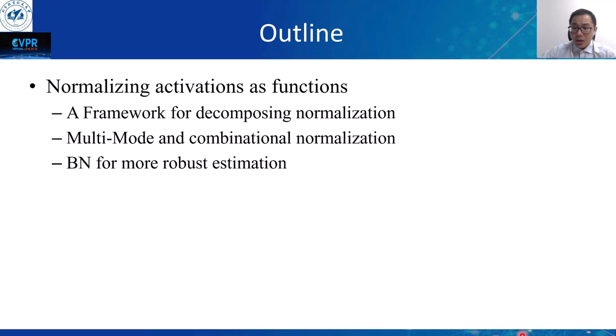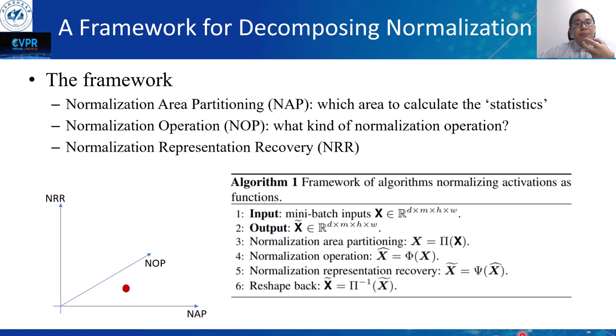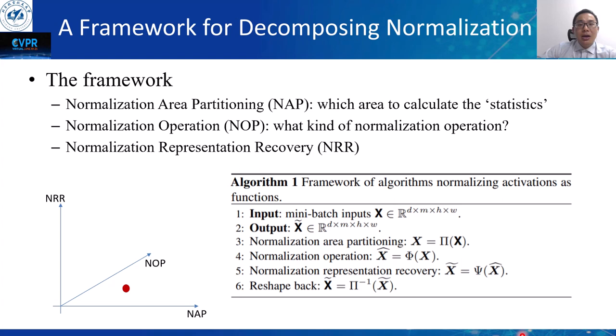We first propose a framework to describe normalizing activation function methods and review the basic single-mode normalization methods. We divide the normalizing activation function framework into three abstract processes: normalizing area partitioning (NAP), normalization operation (NOP), and normalization representation recovery (NRR). By using different NAP, NOP, and NRR, we can conduct different normalization methods.